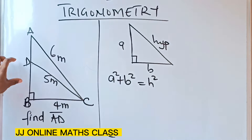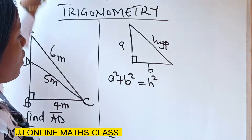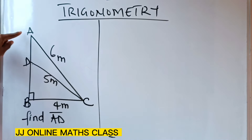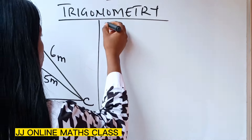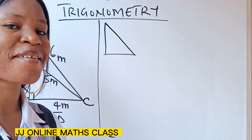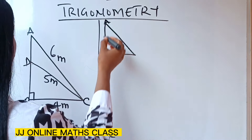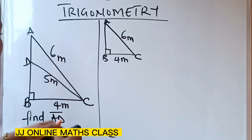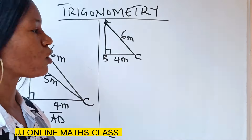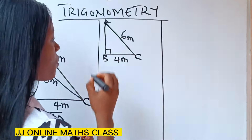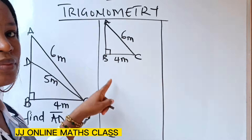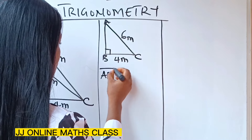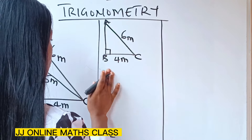We are going to make use of this theorem to find what we are looking for. Like I said, we are going to ignore this particular line DC and concentrate on triangle ABC. This is A, this is B, and this is C — four meters here, a right angle here, and six meters here. Using the Pythagorean theorem, I can easily get line AB.